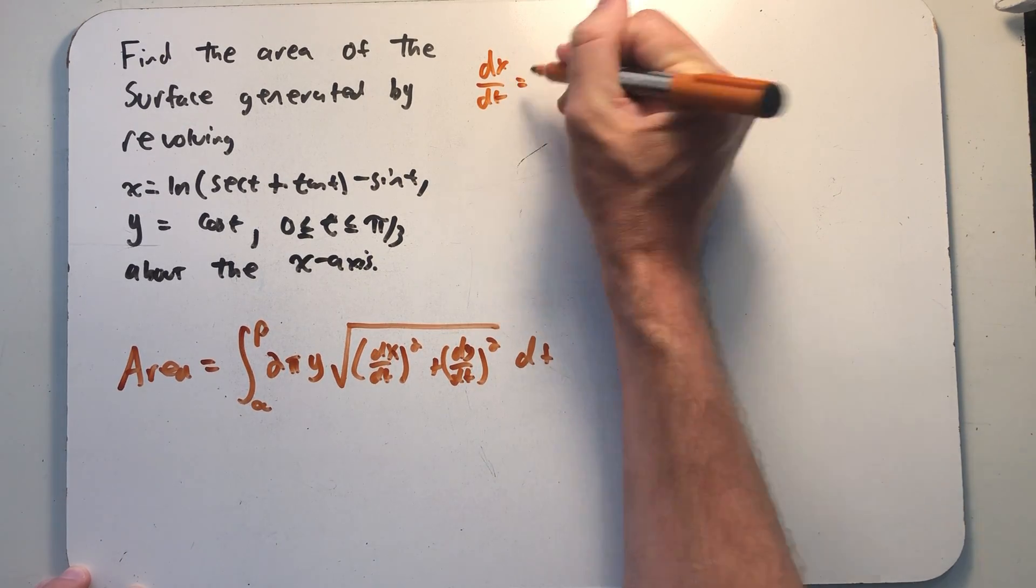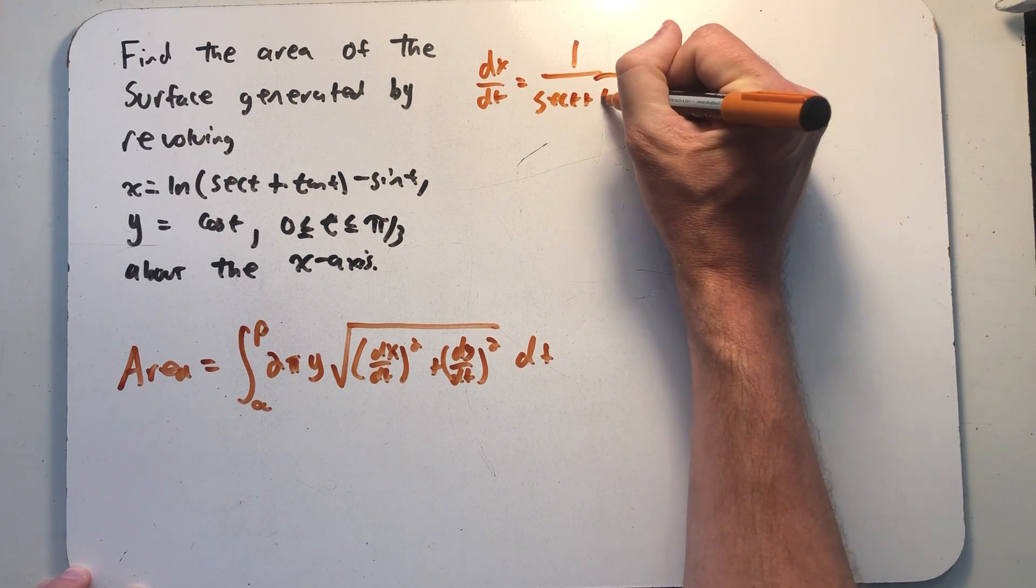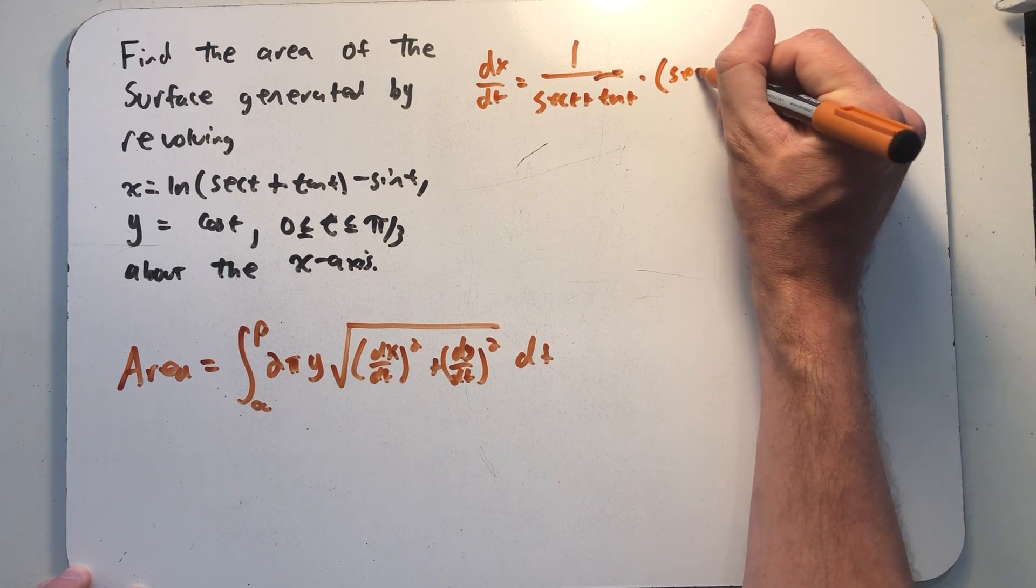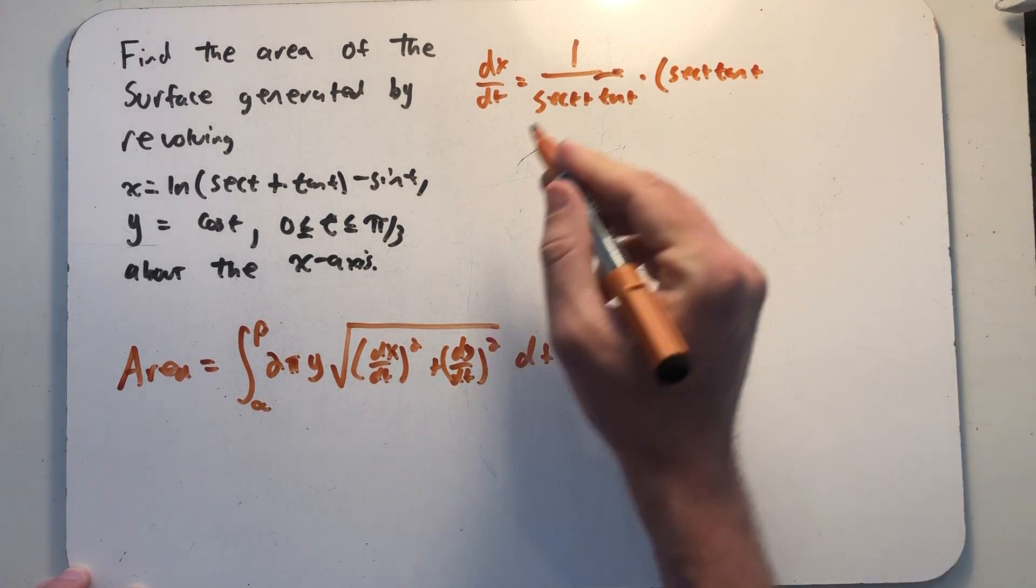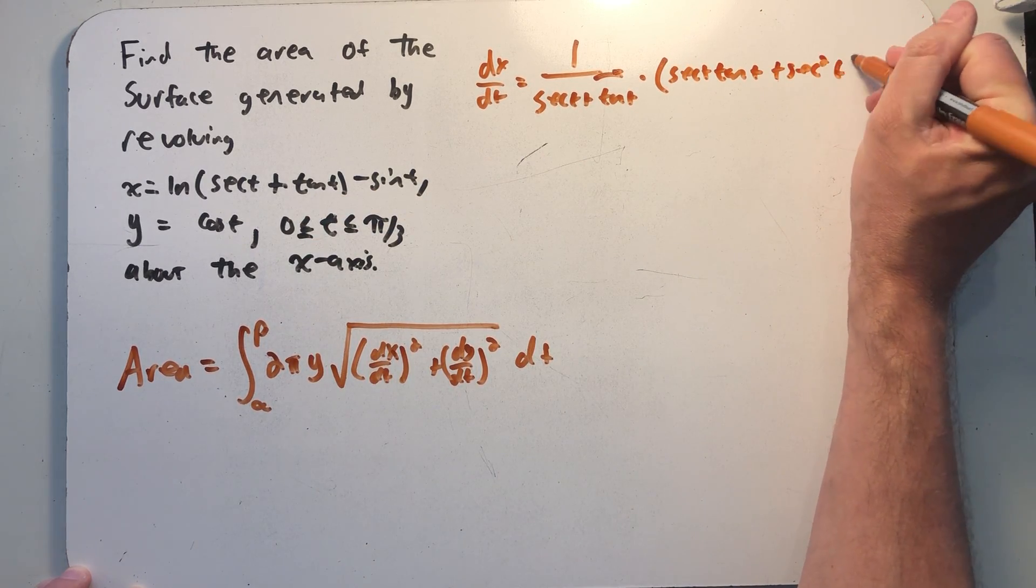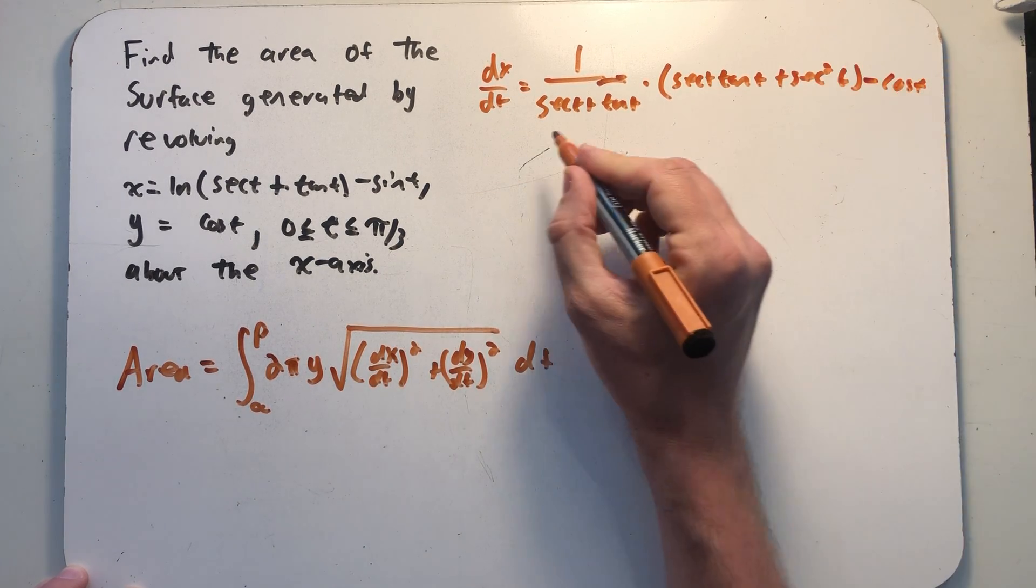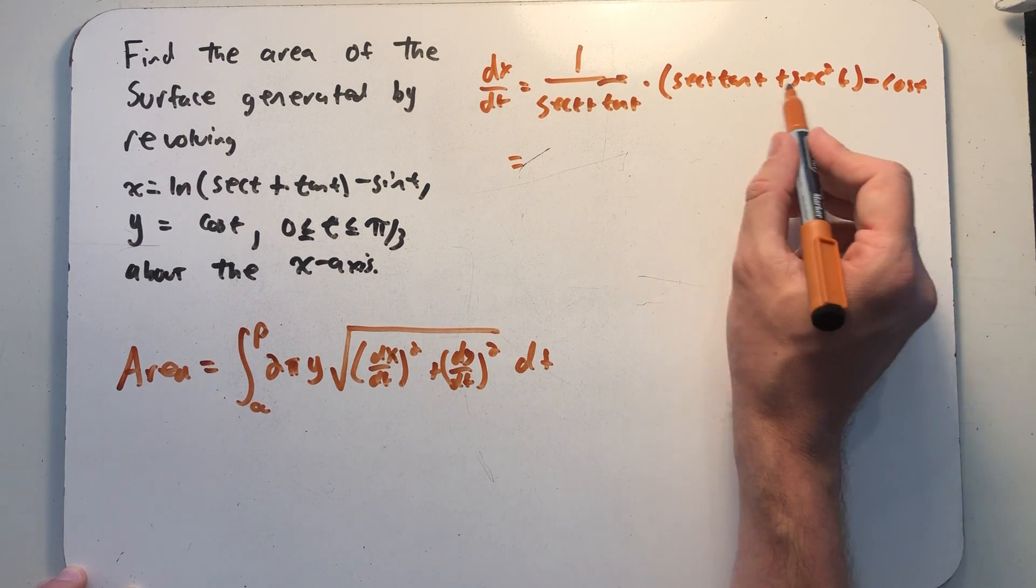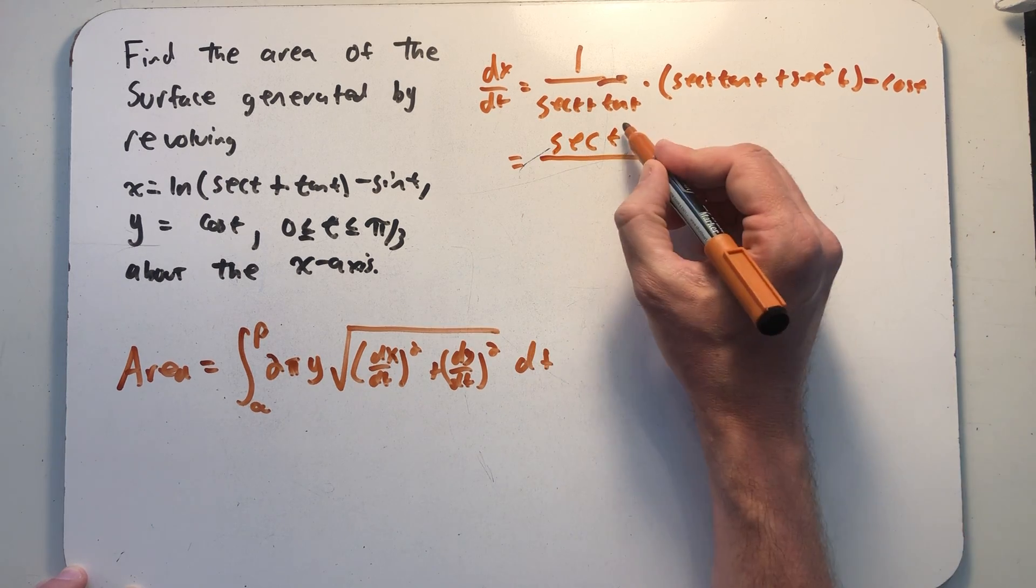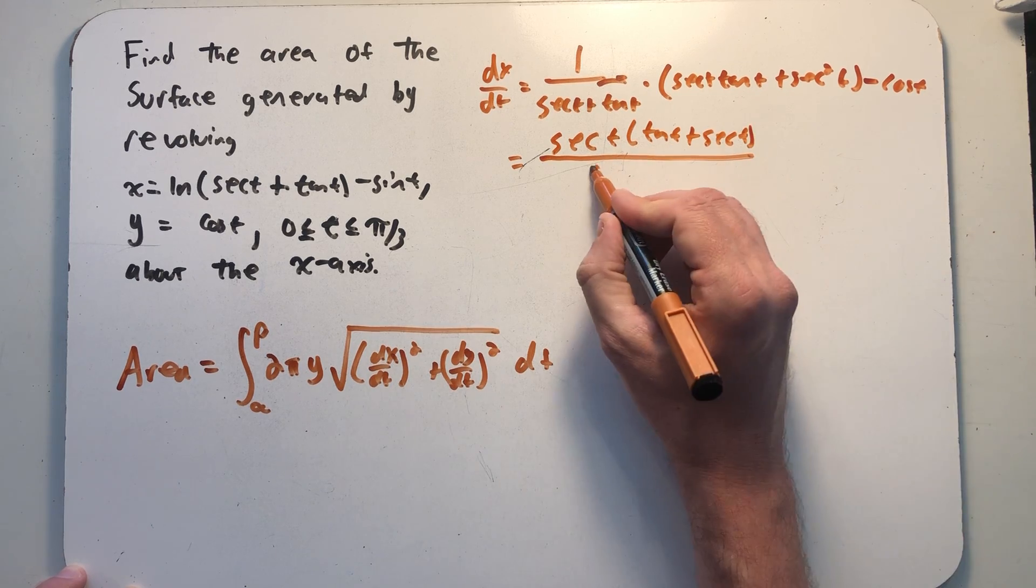dx/dt: 1 over secant t plus tangent t times the derivative of secant t plus tangent t. So the derivative of secant is secant tangent of t, of course, in both spots. The derivative of tangent is secant squared, and I can't forget that there was a minus sign on there, so its derivative is minus cosine. Let's put this together as a fraction, and along the way here, I'm going to factor out a secant on top. So I have secant t, and when I factor that out, I'll have a tangent t plus a secant t, and I see something nice that's going to happen.